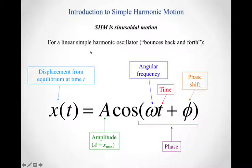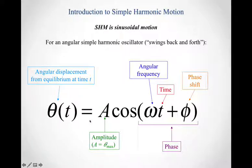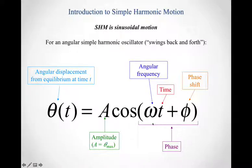This equation applies to a linear simple harmonic oscillator. The same basic equation applies to an angular simple harmonic oscillator. If I have something that swings back and forth, I'm interested in angular displacement rather than linear displacement. So θ(t) = A·cos(ωt + φ), where A is now the amplitude as an angle — the maximum angle the system becomes displaced from equilibrium. It's the same angular frequency times time plus the phase shift inside the cosine. Both types of simple harmonic oscillator are described by essentially the same equation.